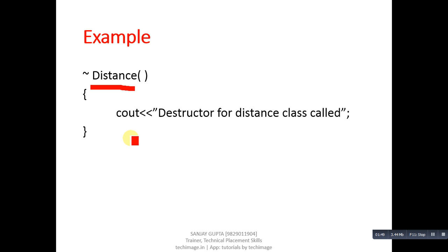So whenever scope of a particular object will be terminating, this definition will be called automatically and this message will be printed on console automatically. If we have implemented one object, one message will be printed with the help of destructor. If we have n number of objects in our program, then this message will be printed n times on console.